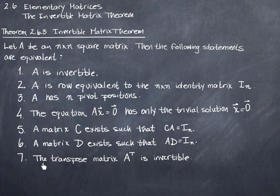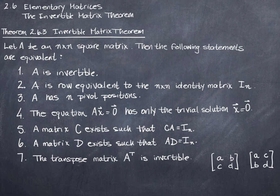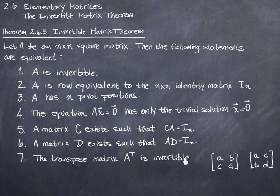The last statement is that the transpose matrix A transpose is also invertible. For example, if a 2 by 2 matrix A with entries A, B, C, D has two pivot positions or can be reduced to the 2 by 2 identity matrix, then I automatically know that A transpose also has an inverse, and all the other statements are true. This one isn't used as often, but it's handy to have in the back pocket.